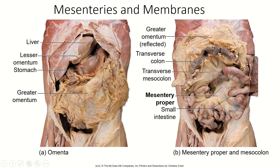When we lift the greater omentum up and lift the transverse colon, we can see the transverse mesocolon here, and then all of this is the mesentery proper, holding the small intestine in place and providing passageway for all of the blood vessels going to and from the intestines, the lymphatic vessels, and the nerves. If we pulled away the small intestine, we would see the sigmoid mesocolon holding the sigmoid colon in place.